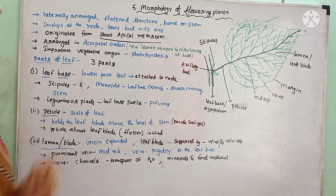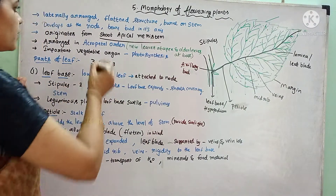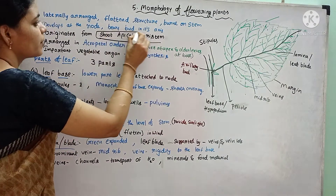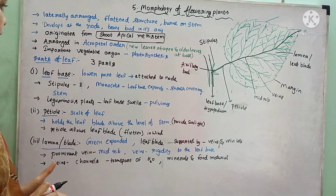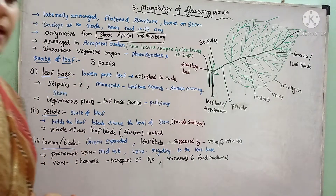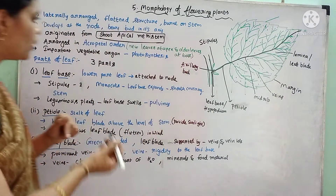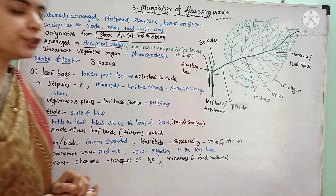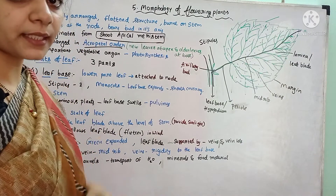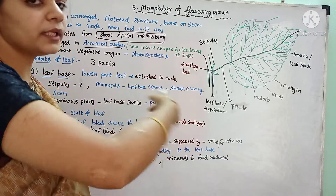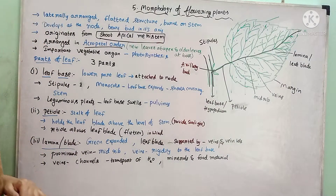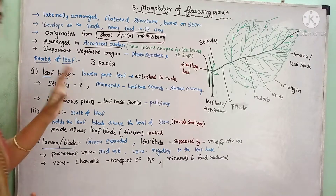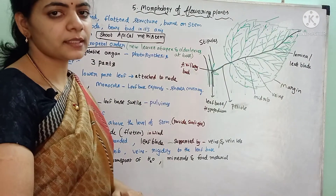These leaves originate from the shoot apical meristem. They are arranged in acropetal order, which means the new leaves are present at the apex region and older leaves are arranged at the basal region. That type of arrangement is called acropetal order.